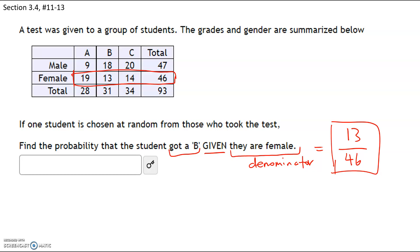Anytime you have a 'given,' that's going to be your denominator but also your sample space — the group that you're choosing from. So you can only choose from the people who identify as female, and of those 46 we figure out how many of them ended up with a B.